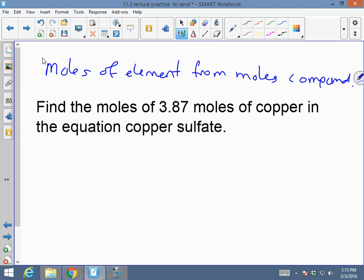Here we go to the compound. It says find the moles of 3.87 moles of copper in the equation copper sulfate. Let's call this copper 1, copper 1 sulfate. So the compound would be Cu2SO4 because SO4 has a charge of 2.